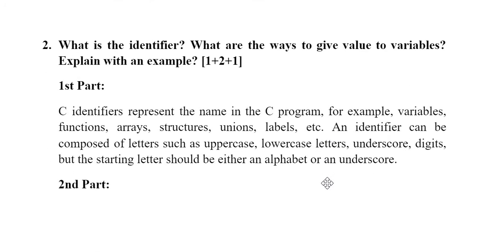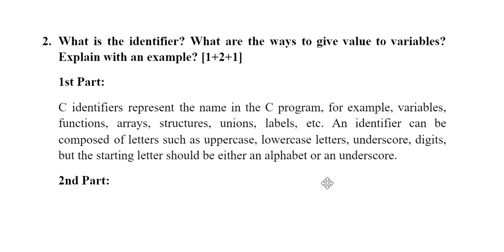Next question: what is an identifier, what are the ways to give values to variables, and explain with an example? An identifier represents a name — the name given to a variable, function, structure, union, or label is called an identifier. For example, 'sum' in 'int sum' is an identifier. An identifier can consist of uppercase letters, lowercase letters, underscores, and digits, but must always start with either an alphabet or an underscore.